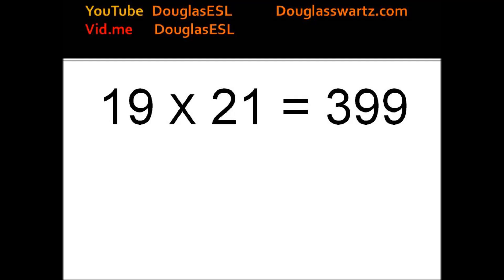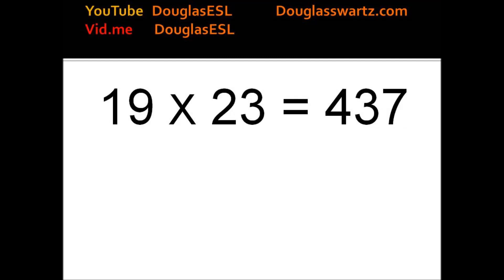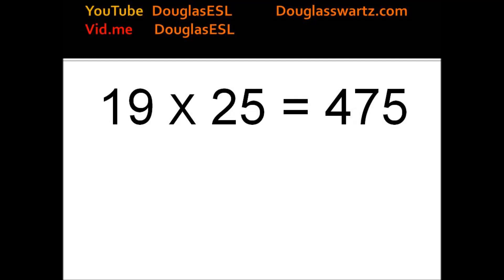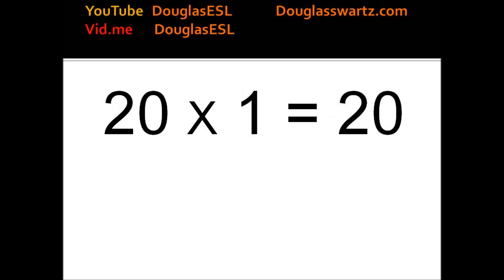19 times 22 equals 418. 19 times 23 equals 437. 19 times 24 equals 456. 19 times 25 equals 475. 20 times 1 equals 20. 20 times 2 equals 40.